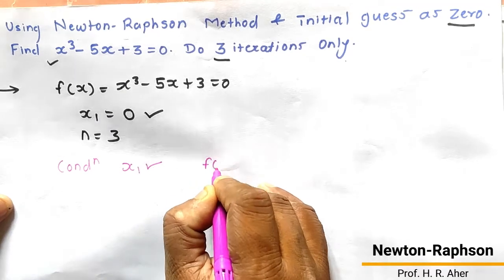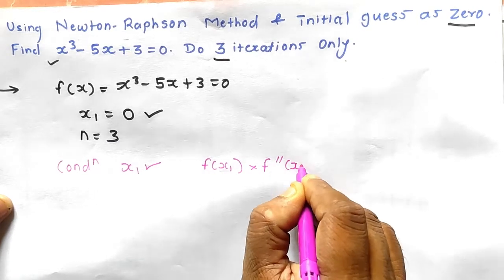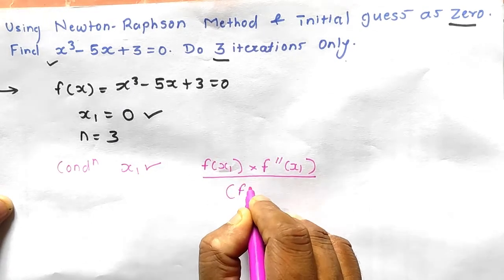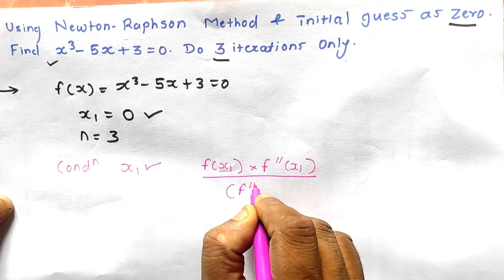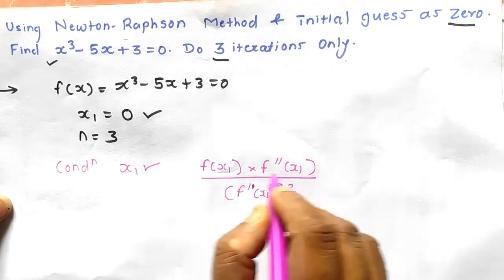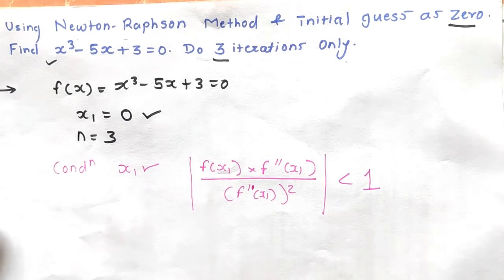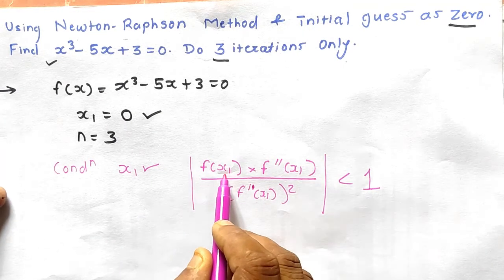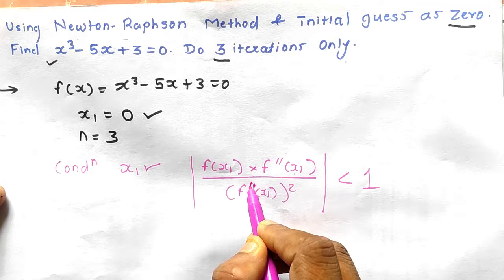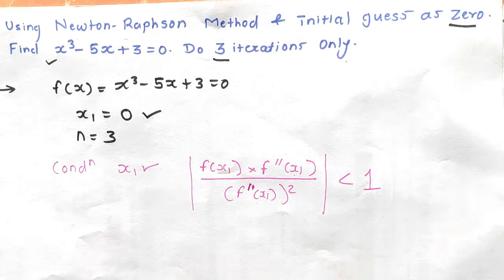The condition to verify whether the initial guess x1 is correct is: f(x1) × f''(x1) divided by [f'(x1)]² should be less than 1. So the formula is: |f(x1) · f''(x1) / [f'(x1)]²| < 1. To apply this, we need the values of f(x1), f'(x1), and f''(x1).